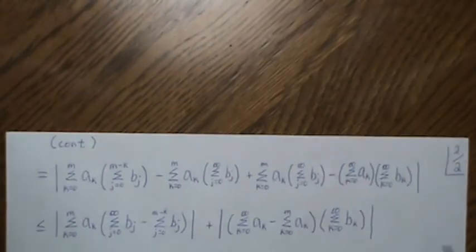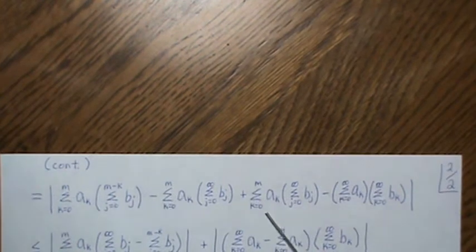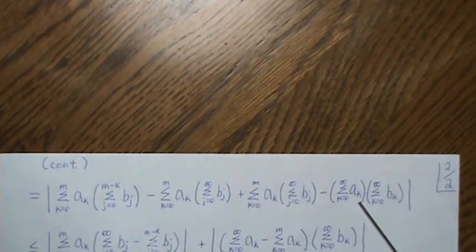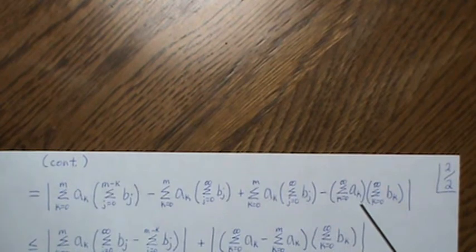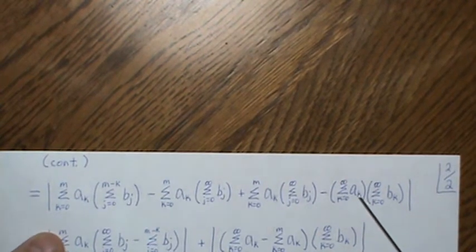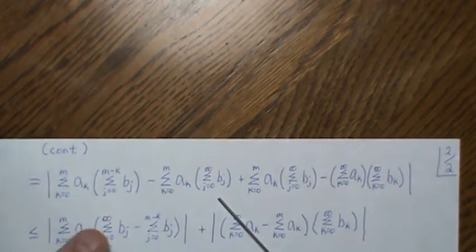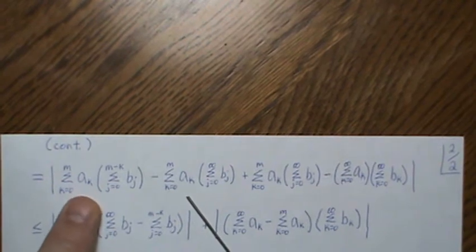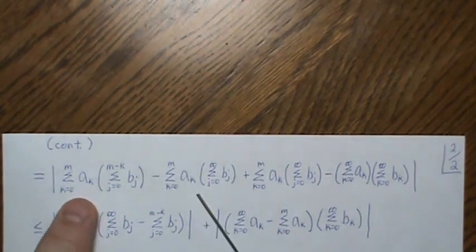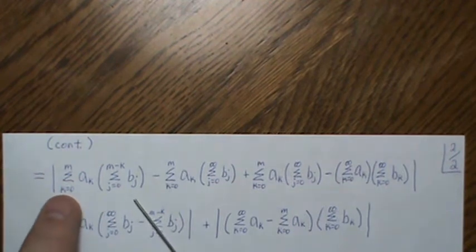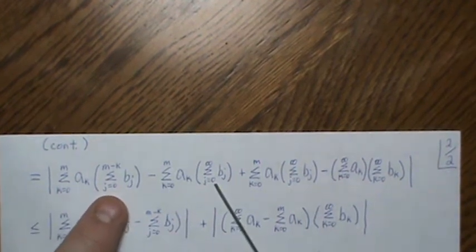We are going to add zero so we add and subtract the same thing to our equation. Now we can combine these, it goes from zero to M of AK so we can factor that out and then combine those